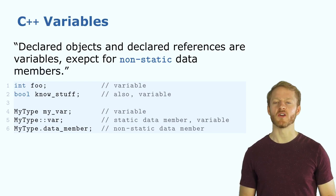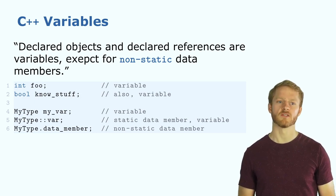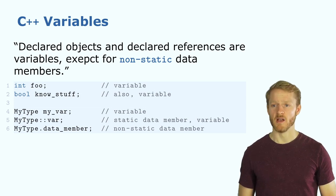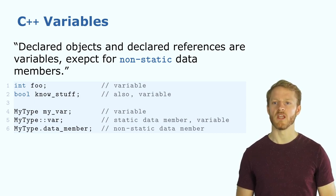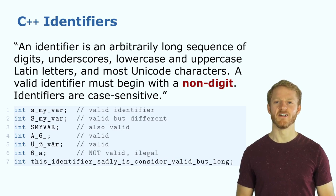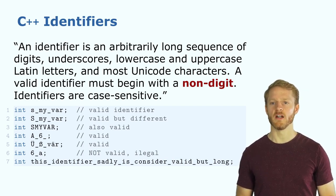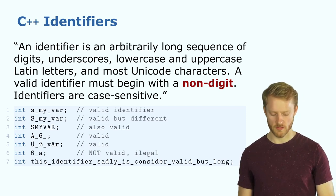What's a variable? All declared objects and declared references are variables, except for non-static data members that we'll cover later in the class on classes. There are different variables of different types — for example, foo which is an integer, or known_stuff which is a boolean. Identifiers are sequences of digits or characters (not starting with a digit) used to reference variables, functions, etc. The only invalid example is one that starts with a digit; all others are valid.